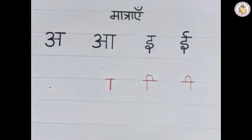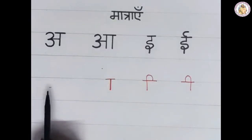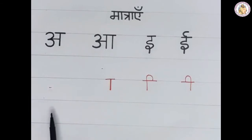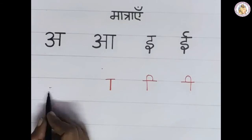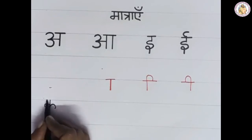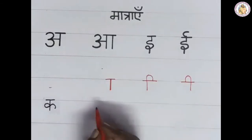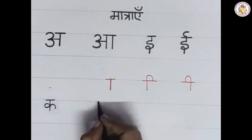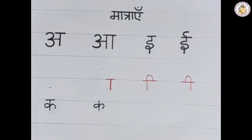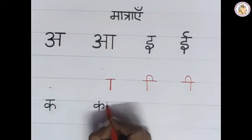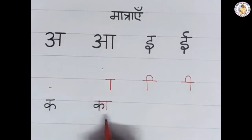Now let us learn how to join this Matra with the vyanjan. This is 'a' — there is no Matra for 'a'. I will give an example with the letter K. There is no Matra for 'a', so write the vyanjan as it is: K. For the 'aa' Matra, first write the vyanjan K, then after the vyanjan draw one standing line. This gives 'Ka'.